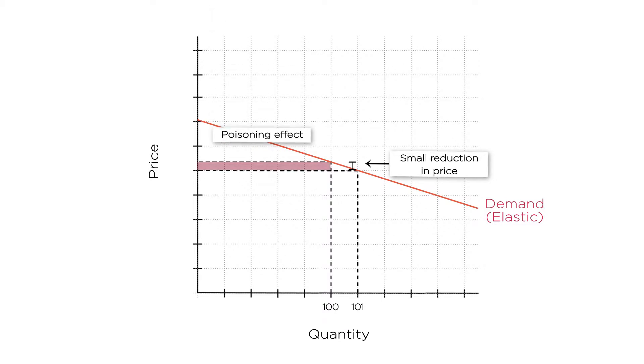So the poisoning effect is small. If the monopolist wants to sell one more unit, he doesn't have to lower prices on previous units all that much.